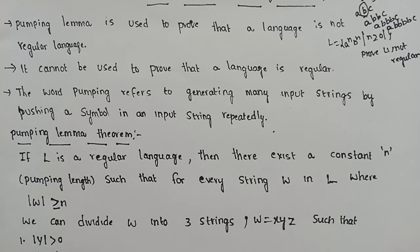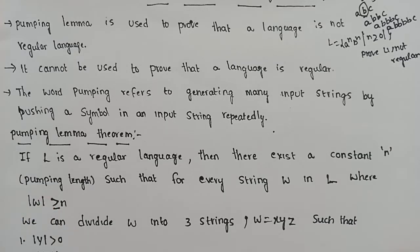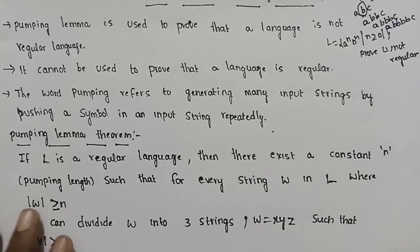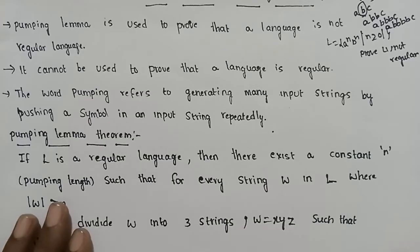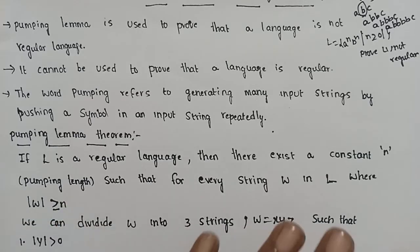The constant N is the pumping length. If you are given a pumping length, then you can refer to it as P, N, or N.